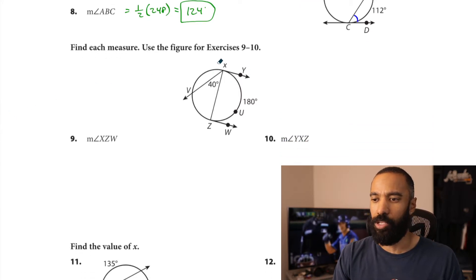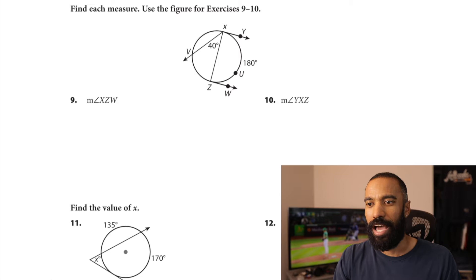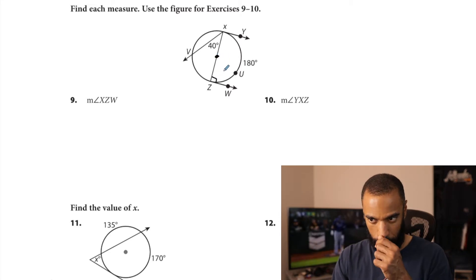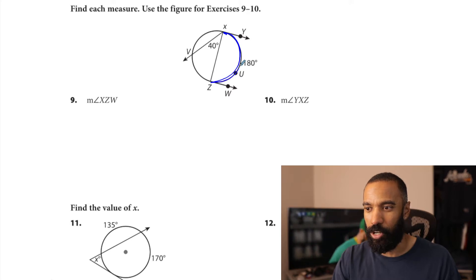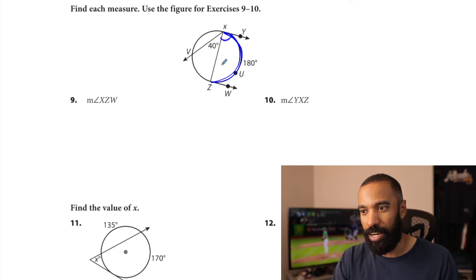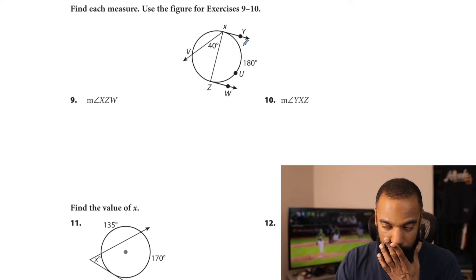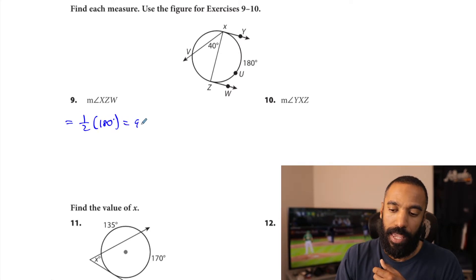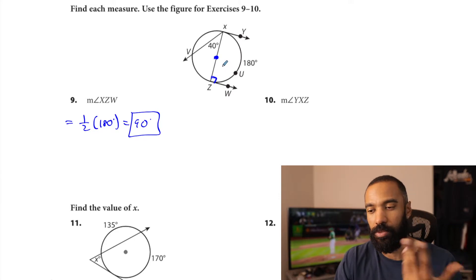The other option is — 124 plus 56 is 180. That's because if both of these intercepted arcs complete the circle, then half of these complete 180 degrees. Find each measure using the figure for exercises 9 and 10. Find the measure of angle X, Z, W. This is a semicircle right here, which means this angle and this angle are both those tangent-inscribed angles. They share the same intercepted arc of 180 degrees — and half of that is 90. So this is half of 180, which is 90 degrees. And there's a thing: a radius or diameter that intersects with a tangent line does intersect at indeed 90 degrees.